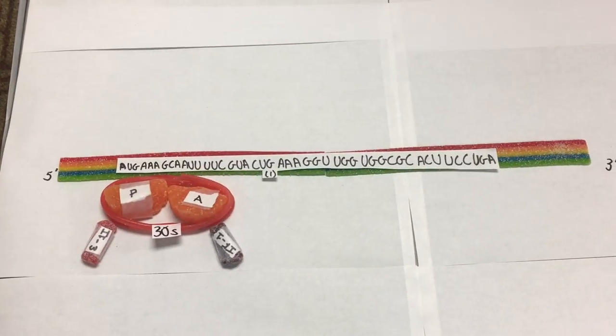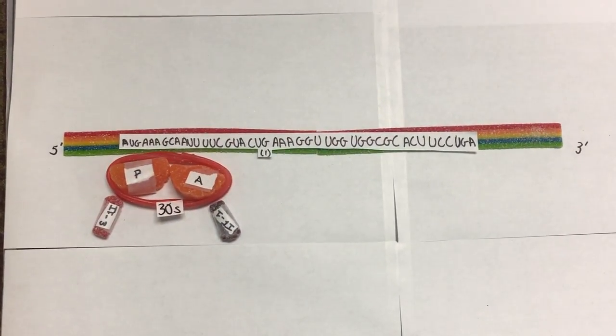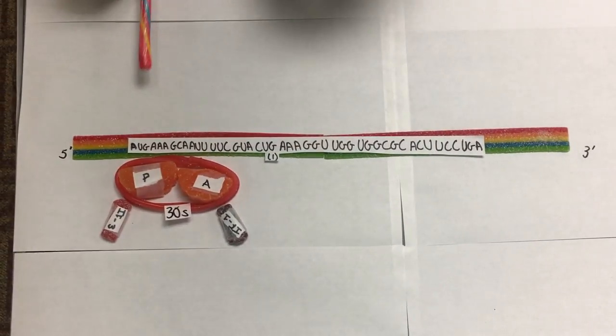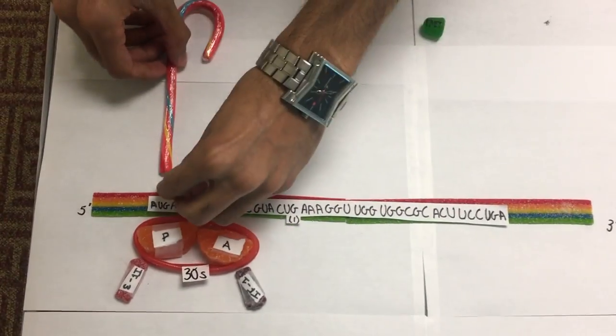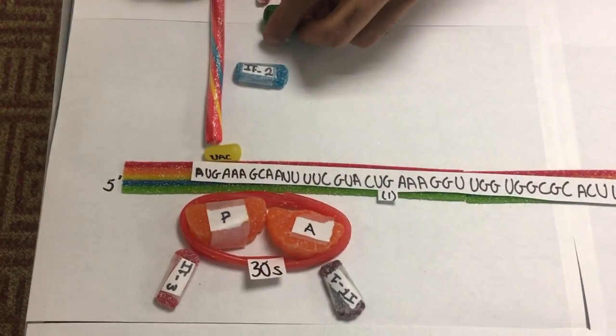The next thing that happens is the IF2 bound to GTP and FMET-tRNA-FMET bind to the complex.